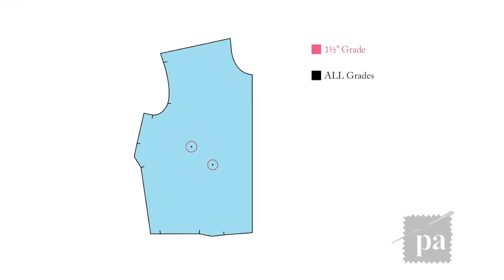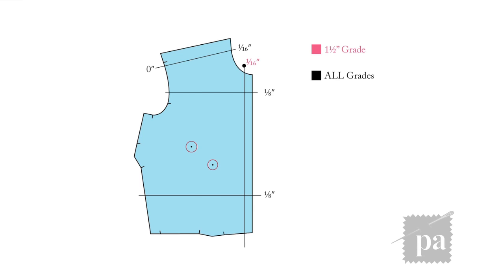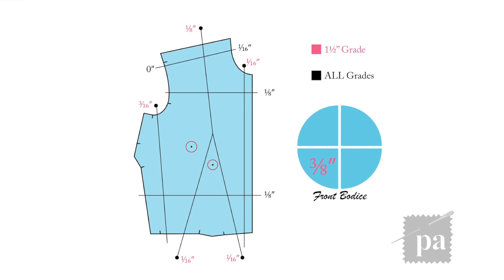The breakdown for the basic bodice with a side and waist, starting with a one and a half inch grade, will be as follows. The lengthwise is for all sizes: from the armhole it's zero and the neck it's one sixteenth, that's parallel to the shoulder. From center front to waist, you're going to enlarge it a quarter, so that's going to be an eighth and an eighth. Then widthwise: at the neck it's one sixteenth, at the shoulder it's one eighth, at the side seam it's three sixteenths. If you add all those together that gives you three eighths. So you have three eighths for the right and three eighths for the left, and that equals three fourths. For the back you have three fourths, so that equals one and a half — there you have your one and a half inch grade.